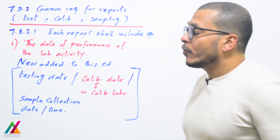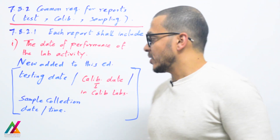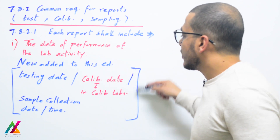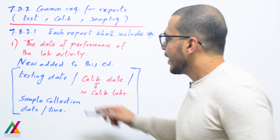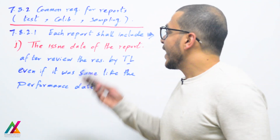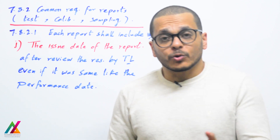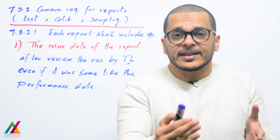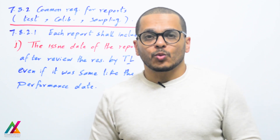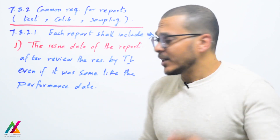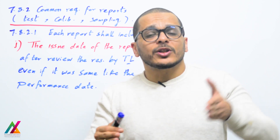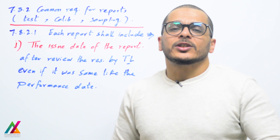The date of performance of the lab activity — when the lab activity was performed — shall also be recorded. This point was added to this edition: the testing date, calibration date for equipment in a calibration laboratory, or sample collection date and time if the lab is responsible for sampling. After that, the issue date of the report — when the report was issued after analyzing the sample and the technical lead reviewed and approved the result — shall be recorded. Even if the performance date and issue date are the same, both shall be recorded in the report.